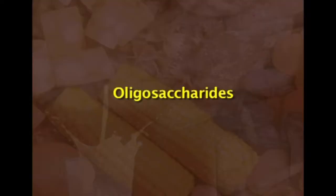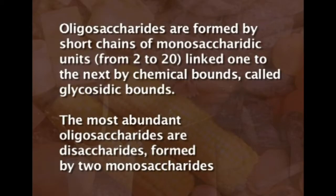There can also be three-, four-, or five-carbon sugars — for example, ribose, which is a five-carbon sugar. Oligosaccharides are formed by short chains of monosaccharides, two to twenty in number, linked one to the next by chemical bonds called glycosidic bonds.